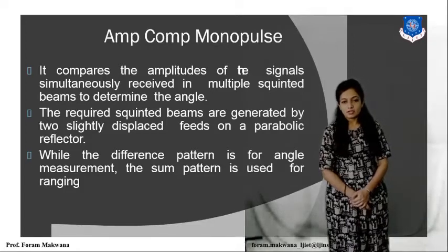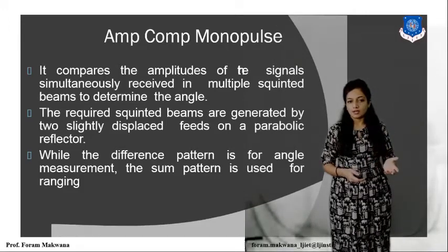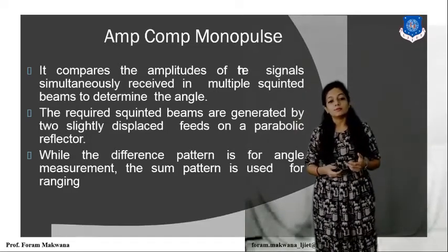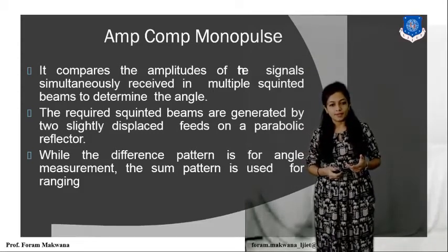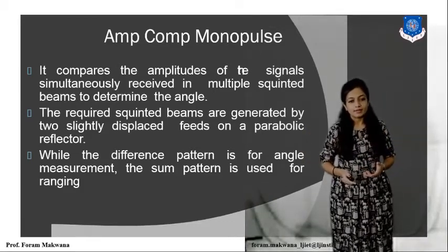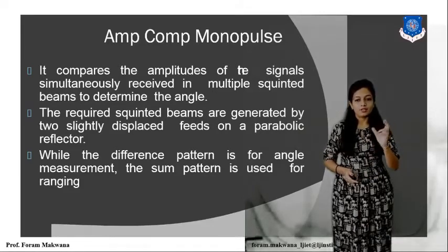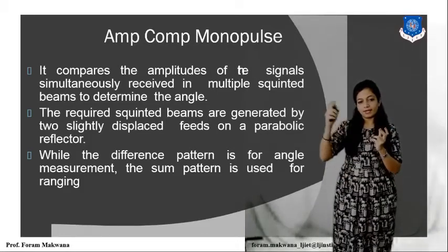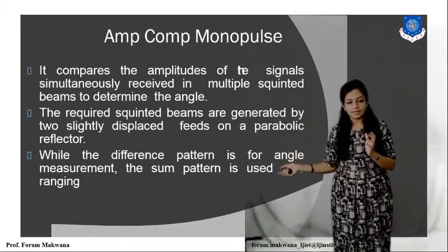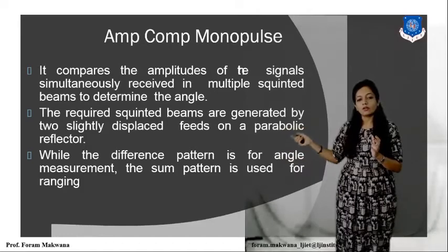As the name suggests, amplitude comparison monopulse compares the amplitude of received echo signals simultaneously received in multiple squinted beams to determine the angle. These required squinted beams are generated by two slightly displaced feeds on the parabolic reflector. When the difference pattern is operated, we are able to generate the sum pattern. The sum pattern is used for ranging, and the difference pattern is used for angle measurement.